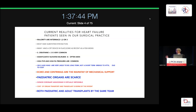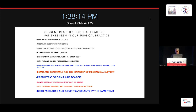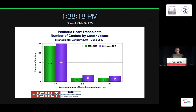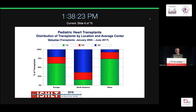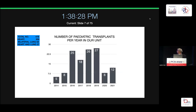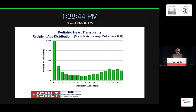The current realities are that the majority of patients are sick — Intermacs 1, 2, or 3. High creatinine is very common, as is high bilirubin and high pulmonary vascular resistance. Long-term VADs are of no use to us as a bridge; ECMO and Centrimag are the mainstay. Pediatric organs are scarce, and both pediatric and adult transplants are done by the same team.